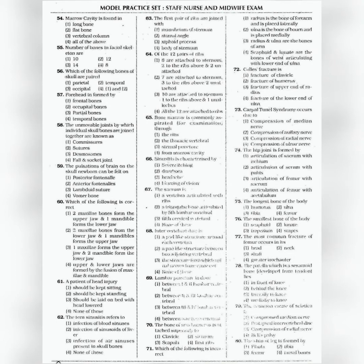Question 58: The unmovable joints by which individual skull bones are joined together are known as — the answer is option 2: Sutures. Question 59: The pulsation of the brain on the skull of a newborn can be felt on — the answer is option 2: Anterior fontanelle. Question 60: Which of the following is correct — the answer is option 1: Two maxillae bones form the upper jaw and one mandible forms the lower jaw.